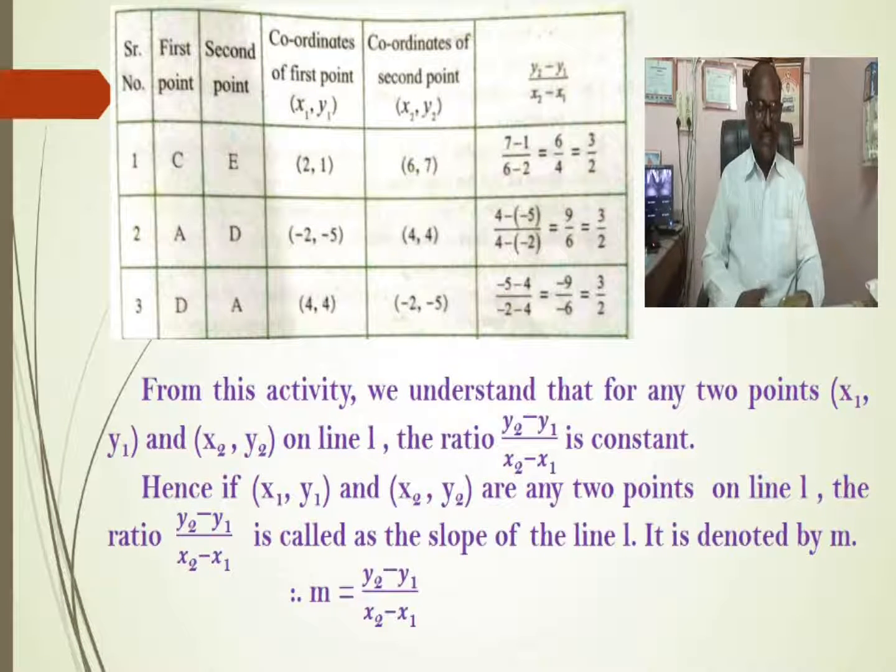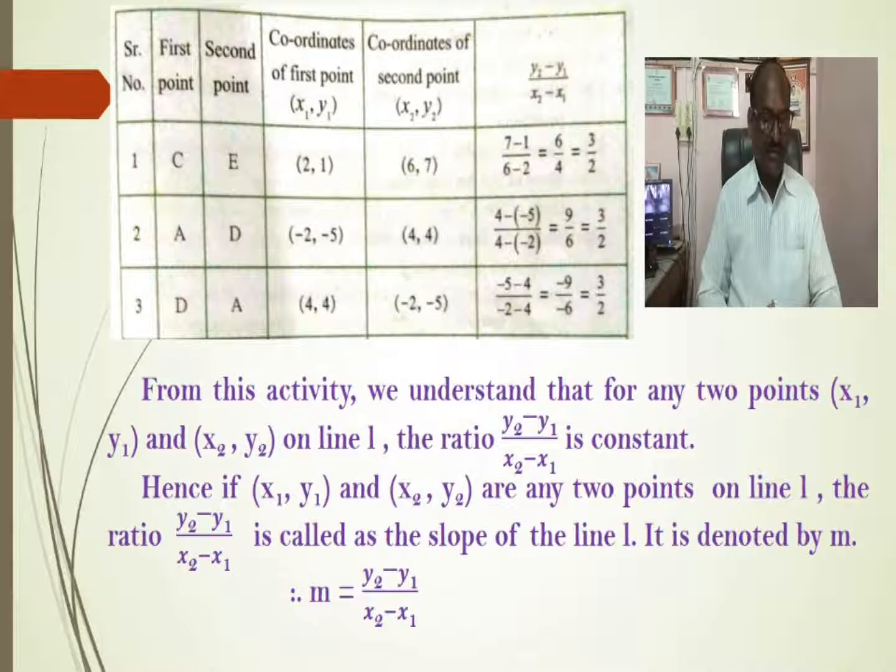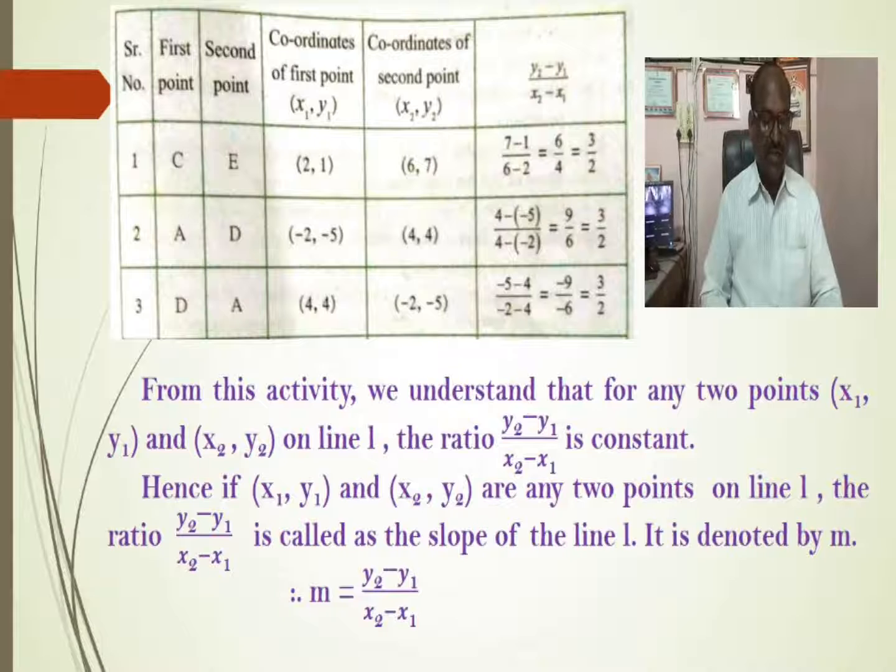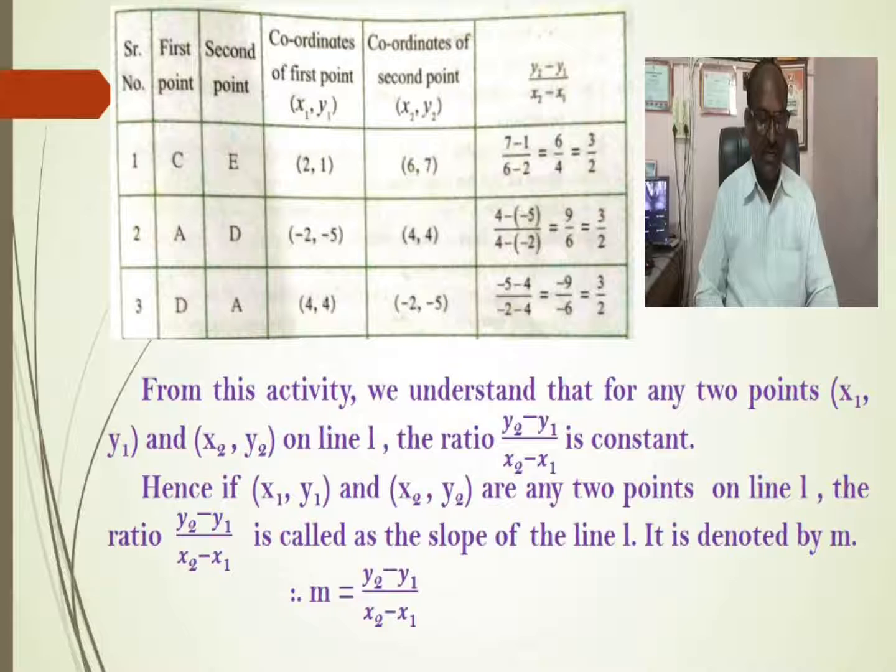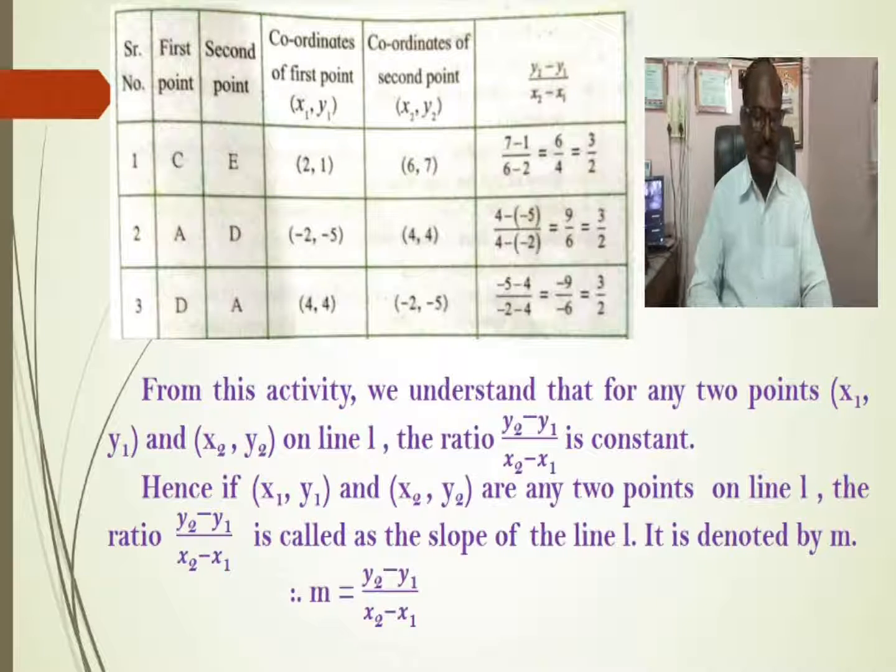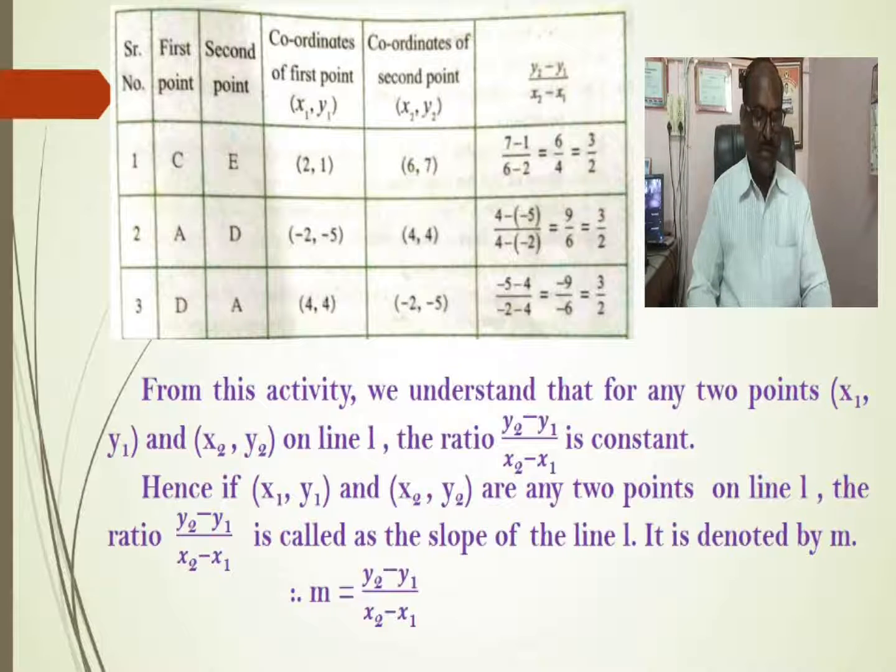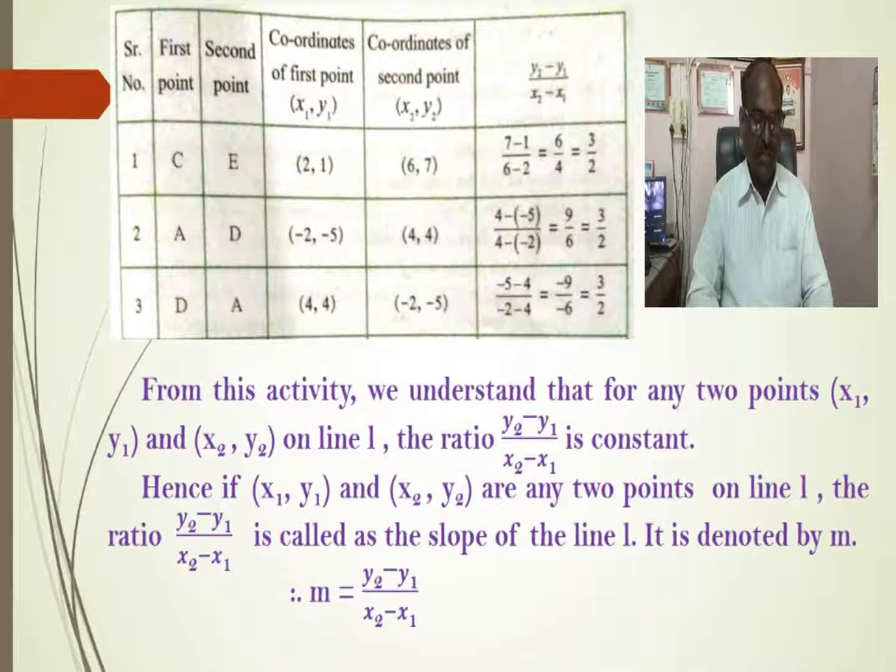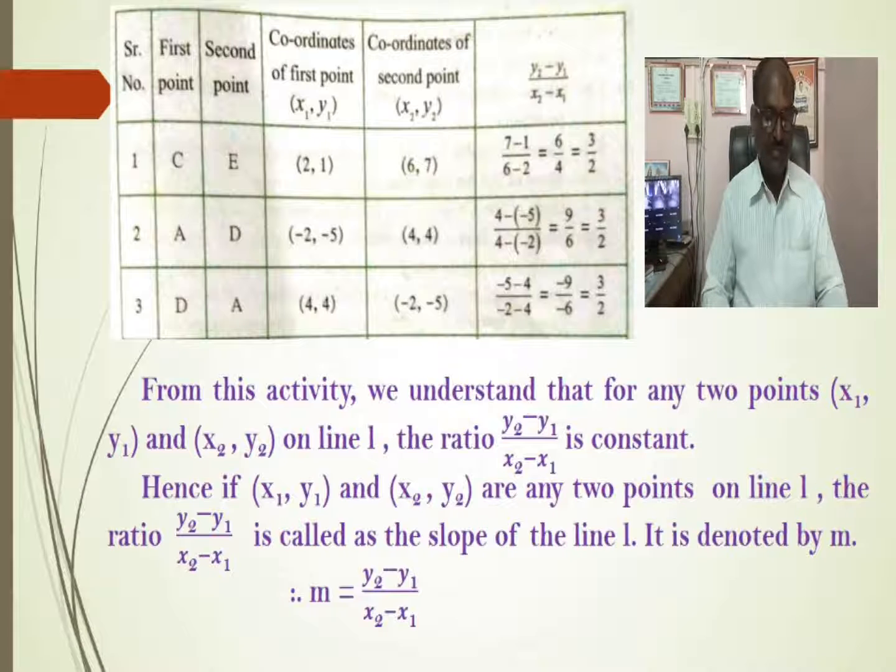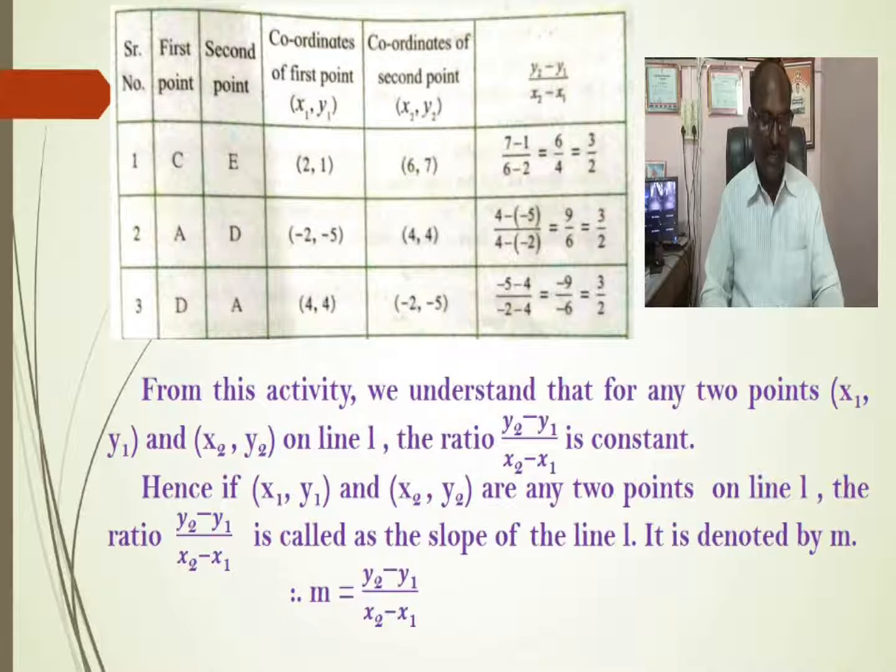In the table, there are three examples. Each example is about two points. First point, second point, then there are coordinates of first point, coordinates of second point, and last column is the ratio of Y coordinates. Difference between Y coordinates upon difference between X coordinates. Take first point is C, second point is E. The coordinates of C are (2, 1), coordinates of E are (6, 7). Then we get (y2 - y1)/(x2 - x1) as (7 - 1)/(6 - 2), that is 6/4, that is equal to 3/2.